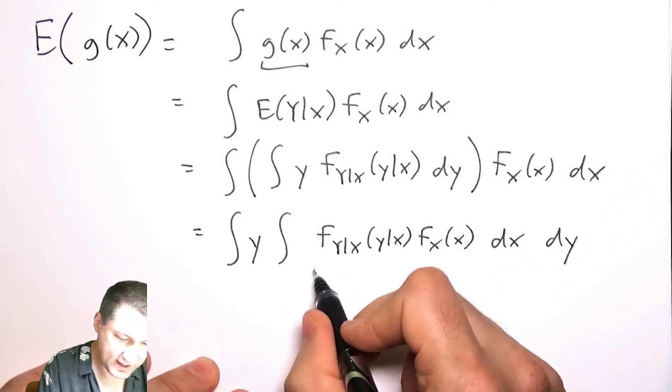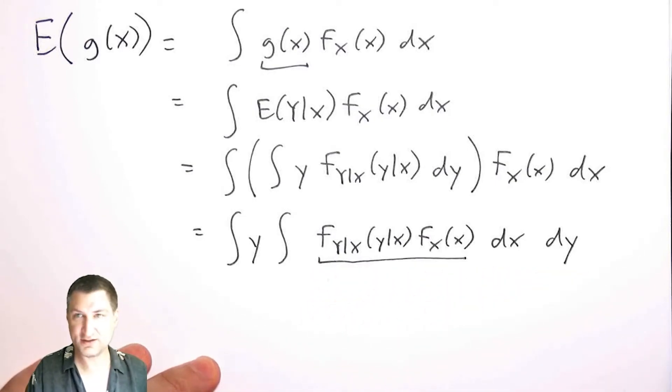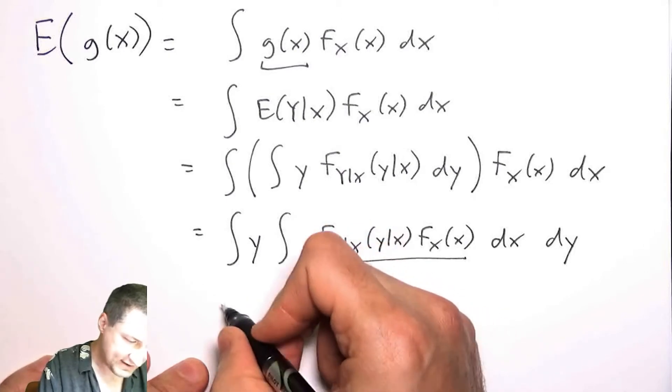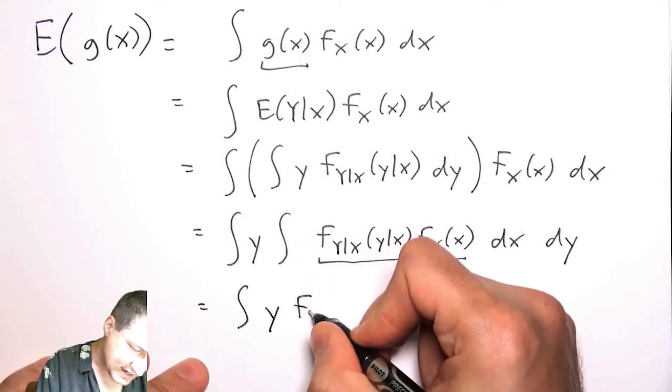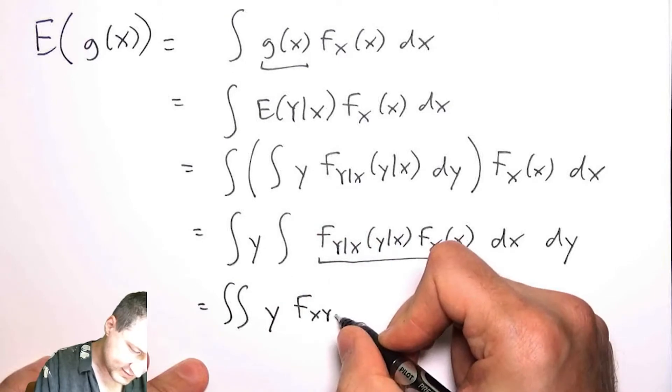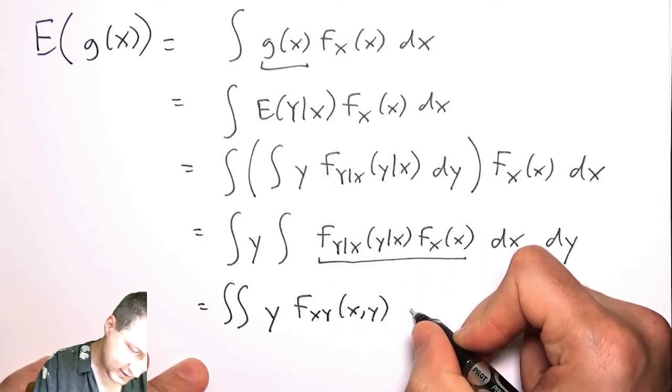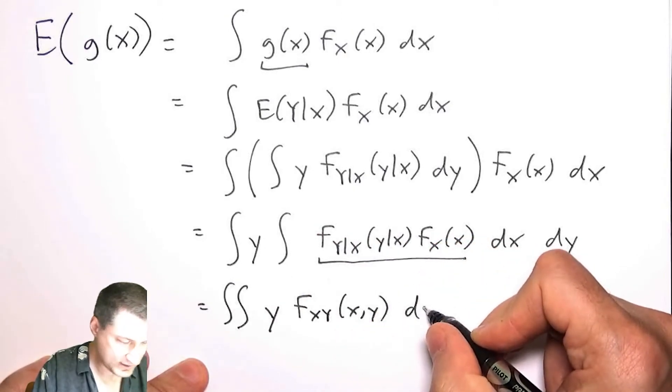And now I say, hey, well actually, this thing here is the joint pdf of x and y together. So kind of what I have is the integral of y times this thing here, dx dy.